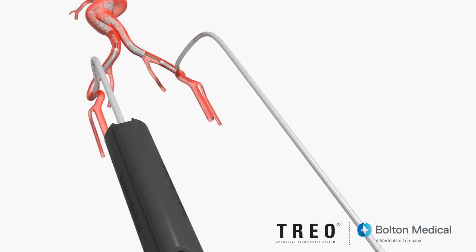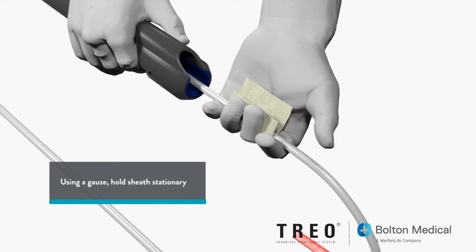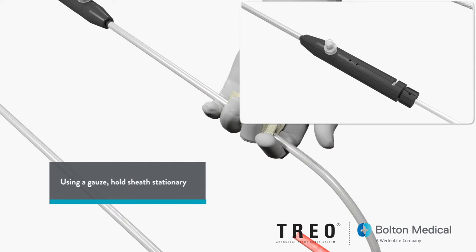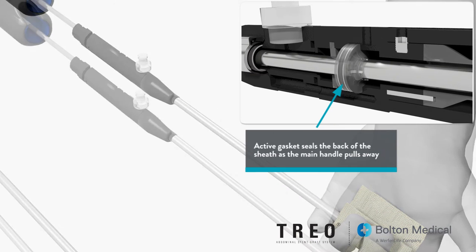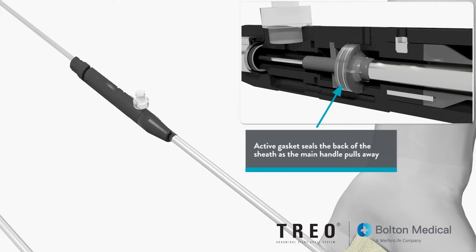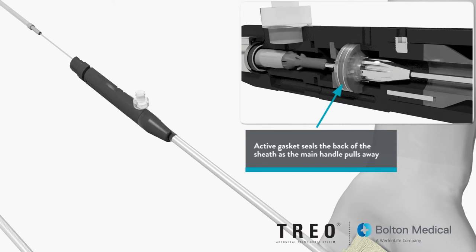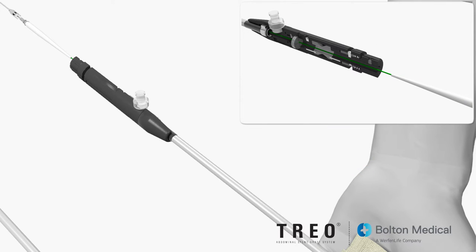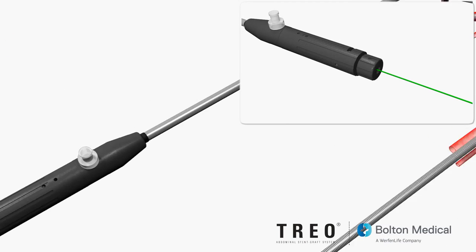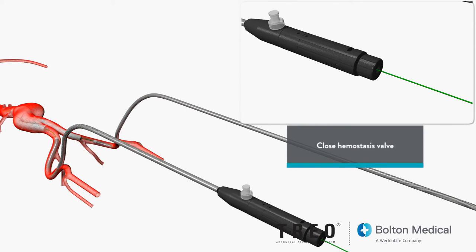Using gauze to hold the main sheath stationary, continue to slide the main handle away from the main sheath as the sheath hub assembly disconnects from the handle. A passive seal blocks blood flow from the back of the sheath as the main handle pulls away. Continue pulling slowly and observe as the delivery system tip exits from the hemostasis valve housing. If necessary, close the hemostasis valve after the tip exits the housing by turning the knob clockwise. Remove the delivery system handle assembly until it clears the guide wire.